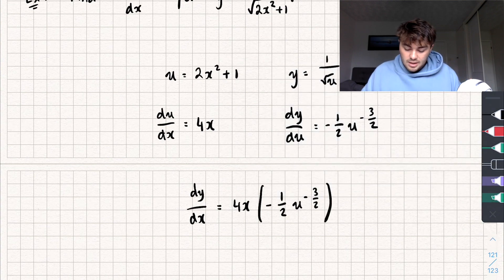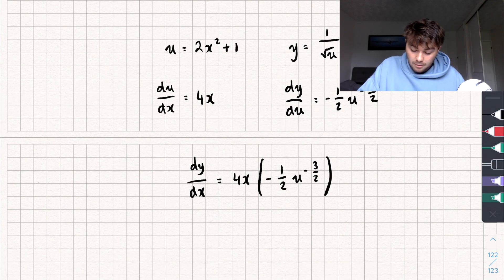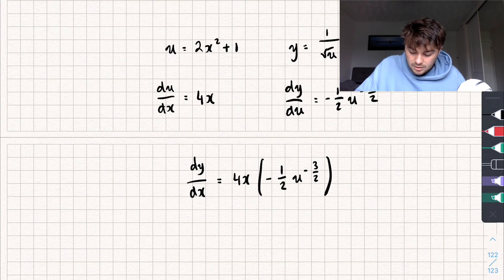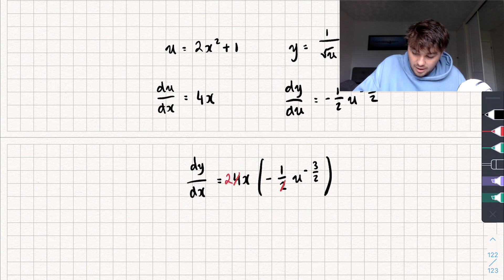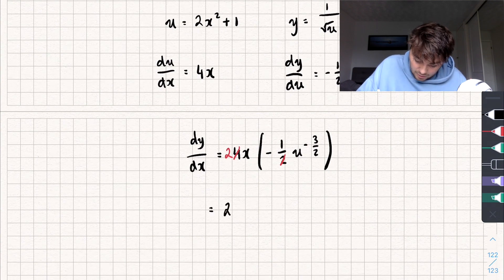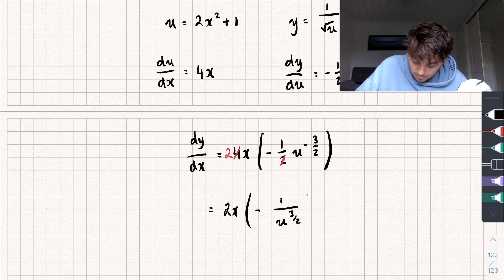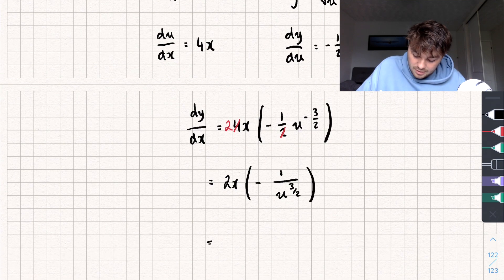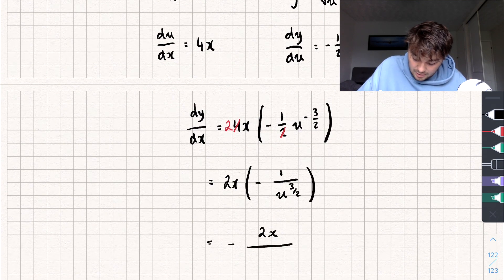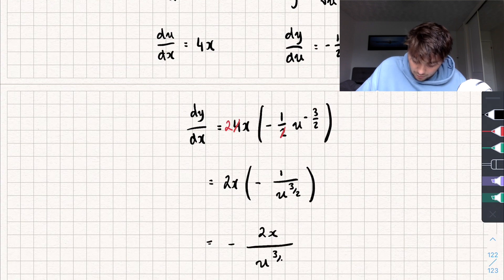And so, you can see that I'm going to be multiplying, well, if we focus on these numbers first, 1 half multiplied by 4, this is going to cancel and leave me with 2x, so let's write that. So, we're going to get 2x multiplied by negative and u to the negative 3 over 2. Well, that's the same as 1 over u to the 3 over 2. And so, we can then say that this is equal to negative 2x over u to the 3 over 2.